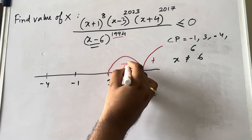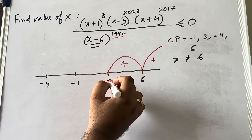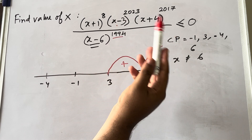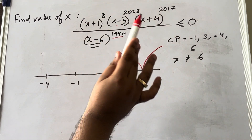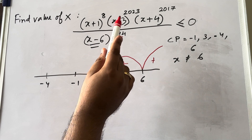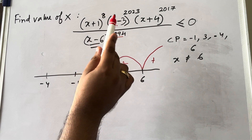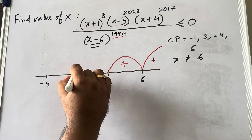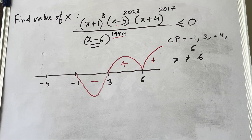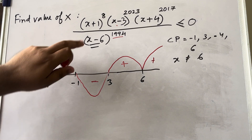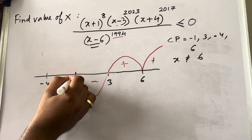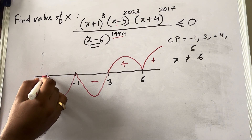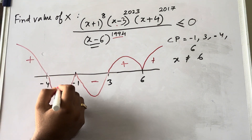At x = 6, the power is even, so you remain on the same side. Moving to x = 3: it comes from a factor with power 2023, which is odd, so you change sides — from positive to negative. At x = −1, the power is even, so you remain on the same side. At x = −4, the power is odd, so you change sides again. This gives us the sign chart: plus, minus, plus, minus from right to left.